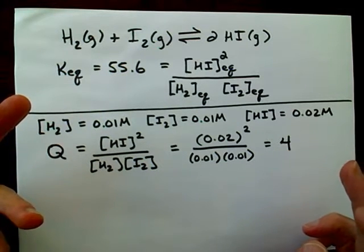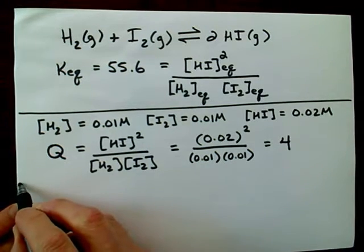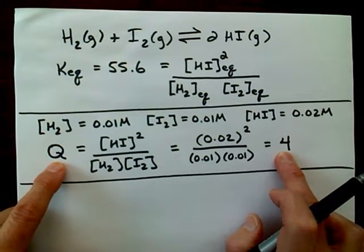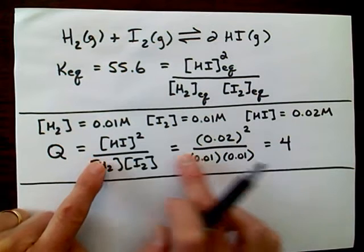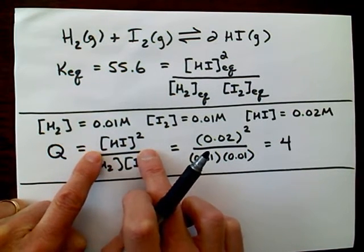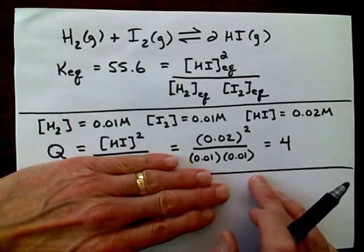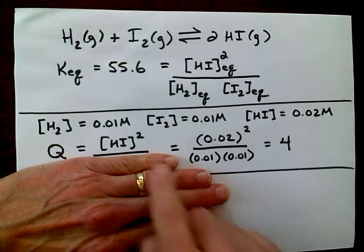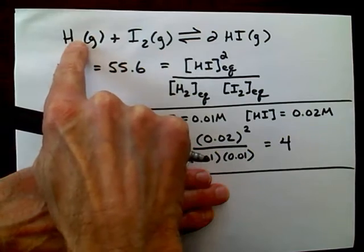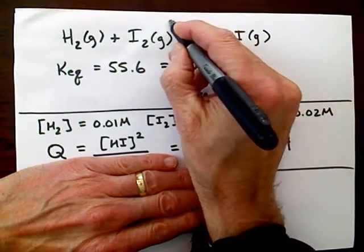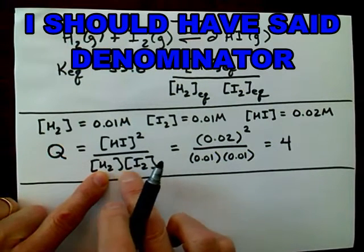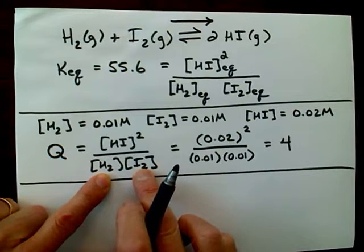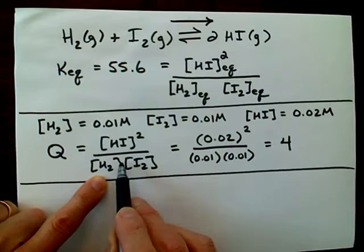Now which way is the reaction going to go to get to equilibrium? This value of Q is going to help us figure that out. We ask ourselves: does Q need to become bigger or smaller to get to 55.6? Of course it's got to get bigger. So this fraction has to get bigger, which means we need to make the numerator bigger. Chemically, that means we need to make the concentration of HI bigger, so the reaction needs to produce more HI. We also know that numbers get larger when we divide by smaller numbers, so these reactant concentrations need to drop.